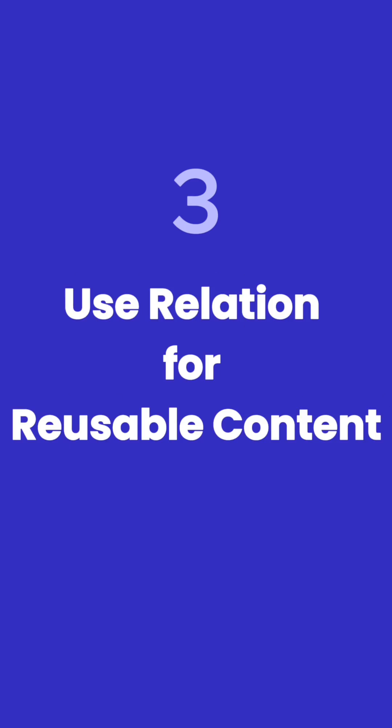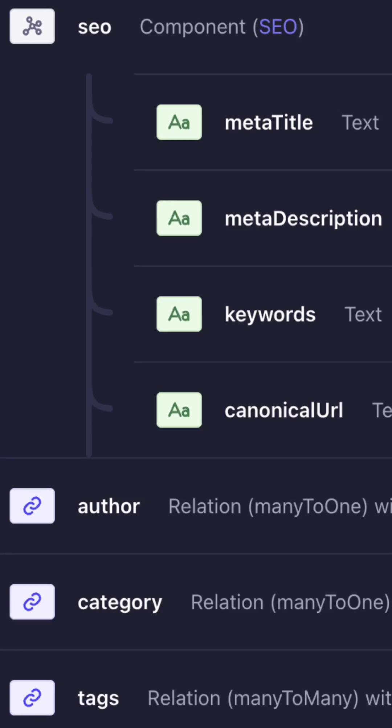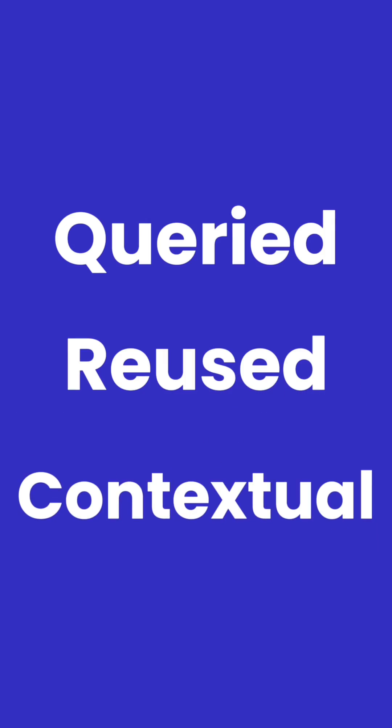Number 3: Use relations for reusable content. If you have content that will be used in multiple places, use relations rather than components. This is so that your content can be queried and reused across multiple contexts.